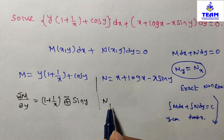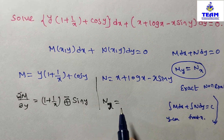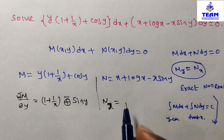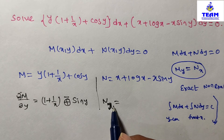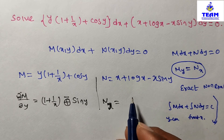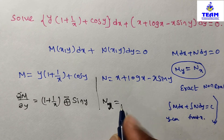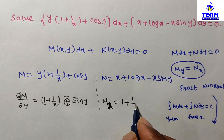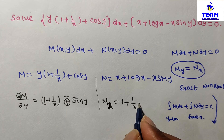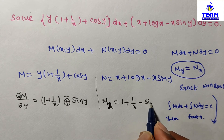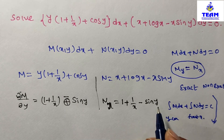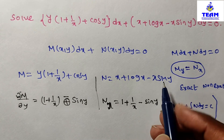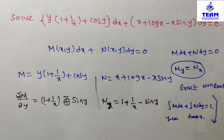Now differentiating N partially with respect to x — that is ∂N/∂x. Treating all other variables as constants: the derivative of x is 1, the derivative of log x is 1/x, and sin y is constant so the derivative of x sin y with respect to x is sin y. So ∂N/∂x = 1 + 1/x − sin y.